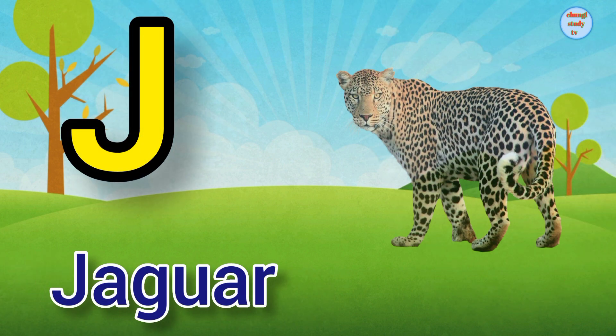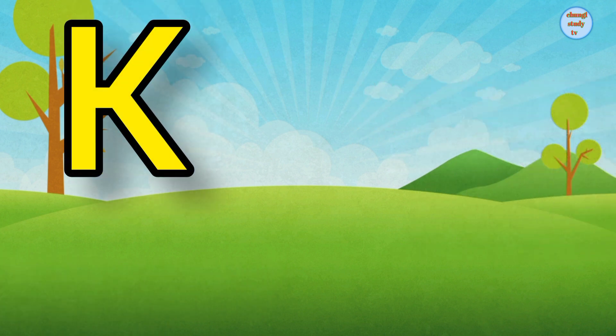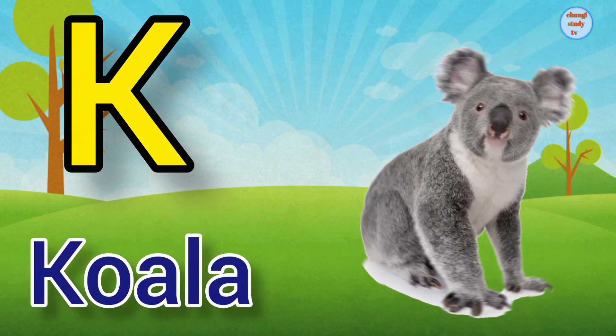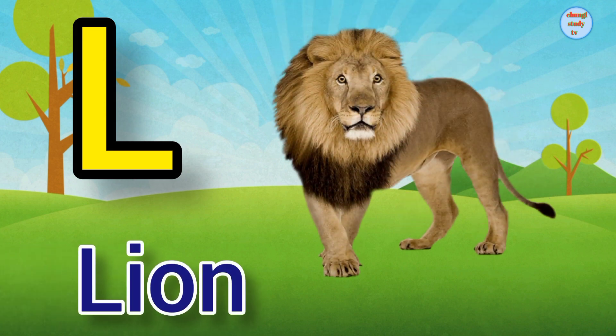J. J for Jaguar, Jaguar means tendua. K. K for Kuala, Kuala means kuala. L. L for Lion, Lion means save.